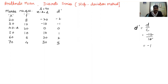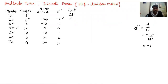Next, d dash is multiplied by frequency to get f times d dash, written as fd dash. So 8 multiplied by minus 2 gives minus 16; 12 multiplied by minus 1 gives minus 12; 20 multiplied by 0 gives 0; 10 multiplied by 1 gives 10; 6 multiplied by 2 gives 12; and 4 multiplied by 3 gives 12.